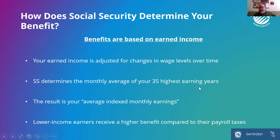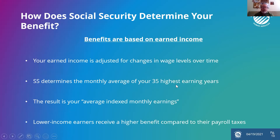They look at the monthly average of your 35 highest earning years. If most of us started working out of college at age 22 and worked the next 35 years, that gets us to age 57. Most of us wouldn't stop working then because we need to keep working until we get to Social Security. As we get into our 50s or early 60s, hopefully we're earning more money than we did in our 20s. So those higher income years later in life knock out the lower income years earlier in life — that's where you end up with your 35 highest earning years.